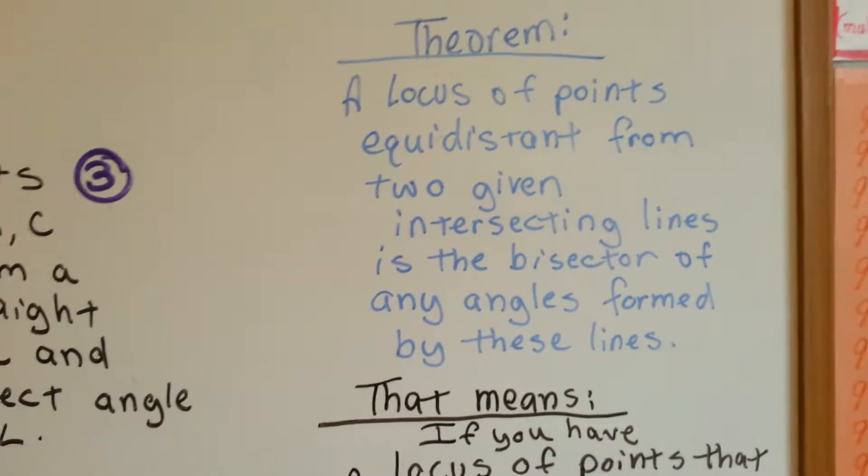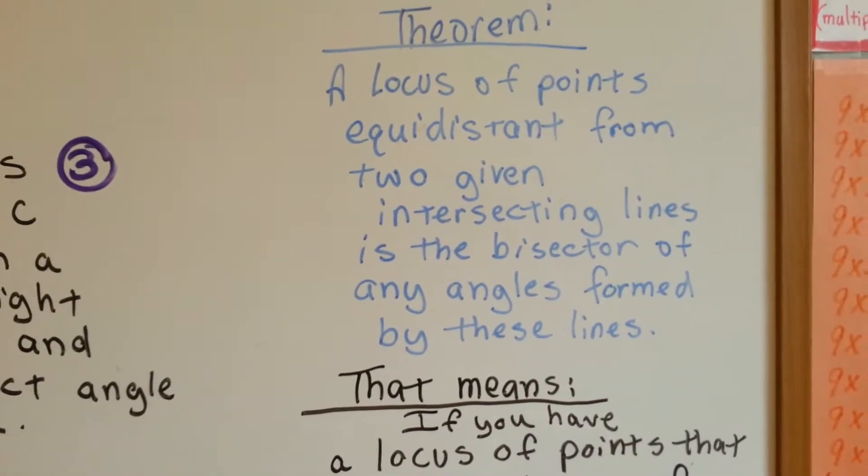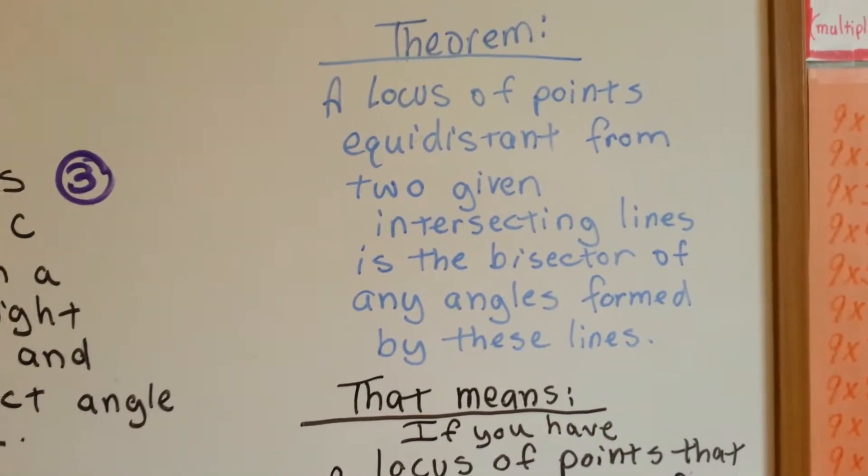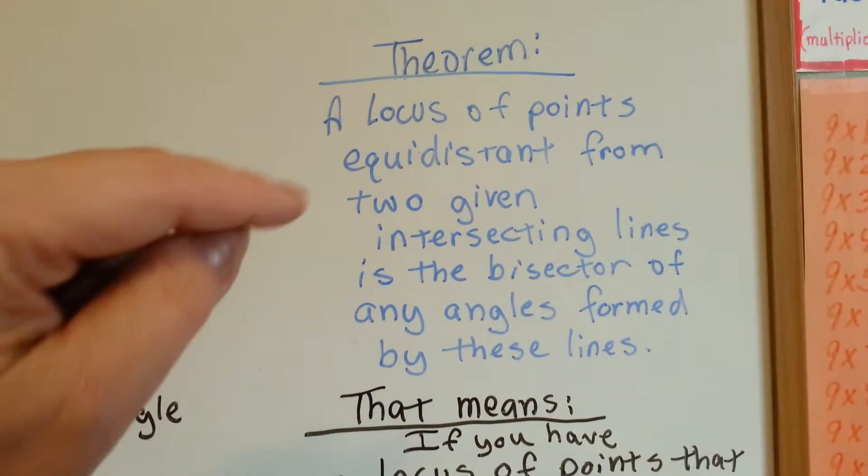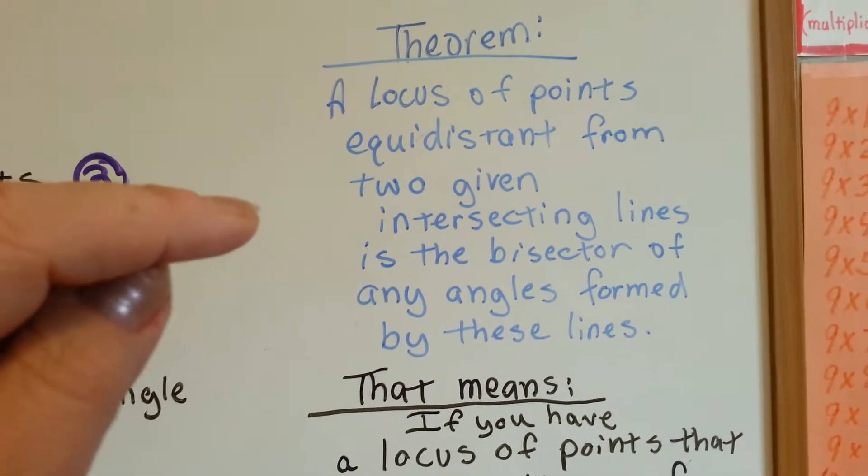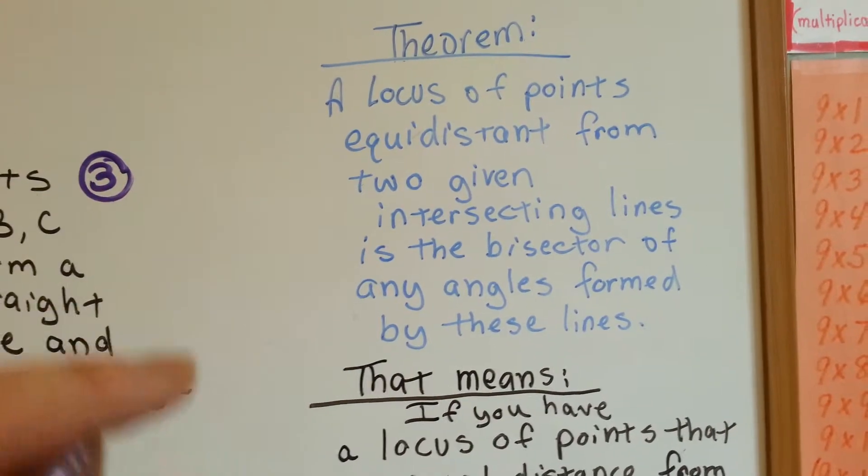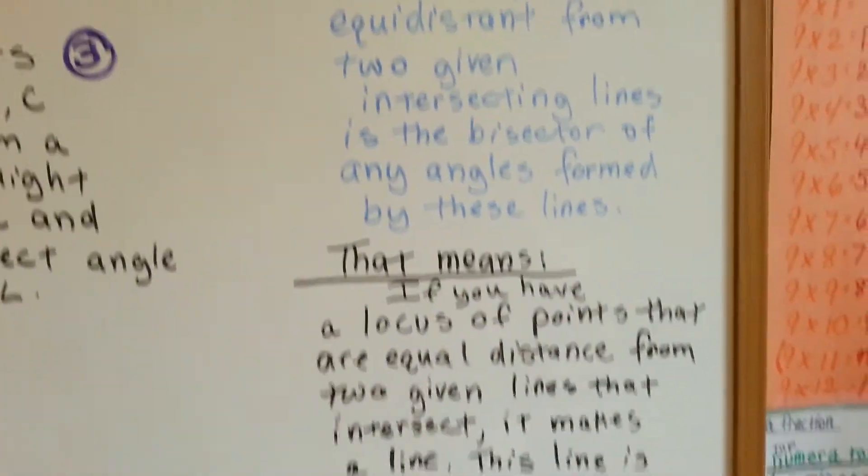A locus of points equidistant from two given intersecting lines. Alright? So there's these points, these locus of points that are equidistant from two intersecting lines. They're the bisector of any angles formed by the lines.